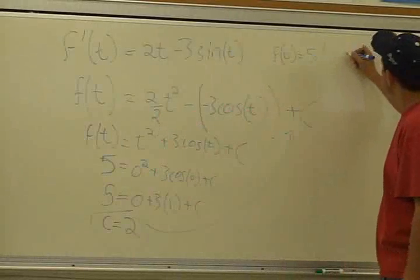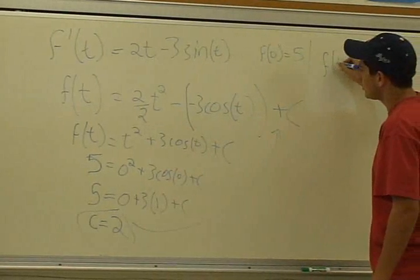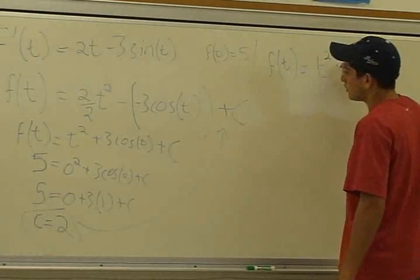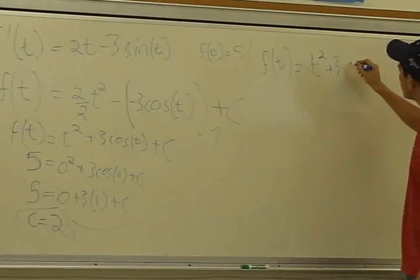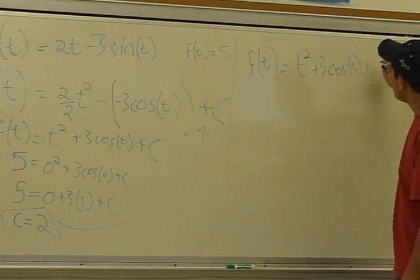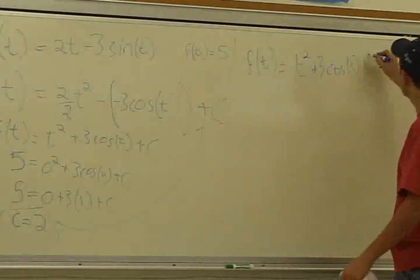So you could just rewrite it as f of t equals t squared plus 3 cosine of t plus the c, which is, as we found down there, is 2.